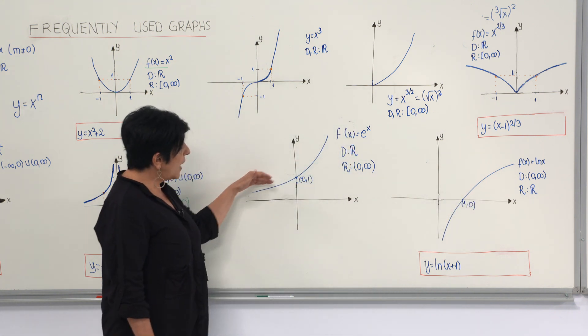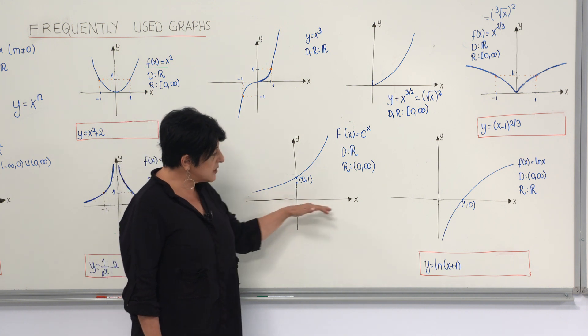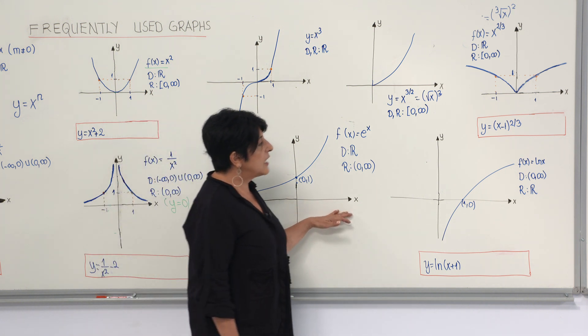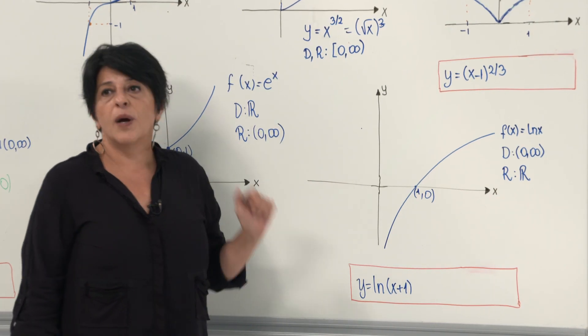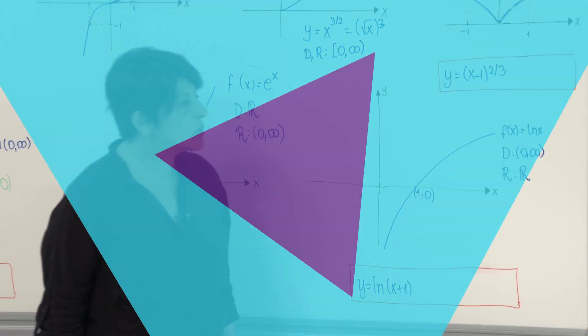And for y equals e to the power x, the x-axis is your asymptote. And for the natural logarithmic function, the y-axis is the asymptote.